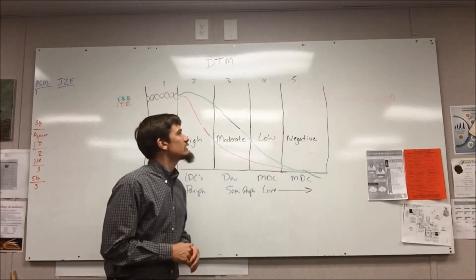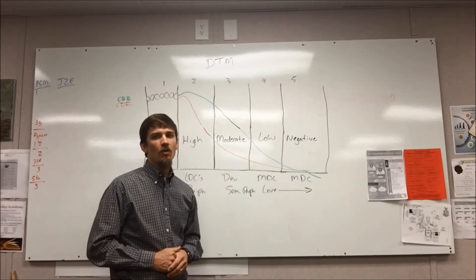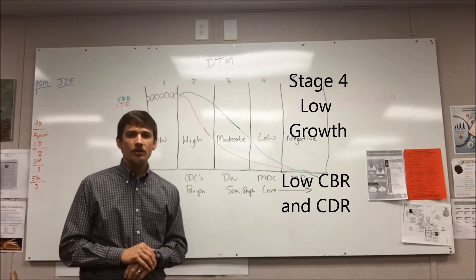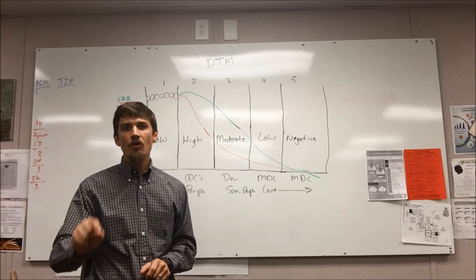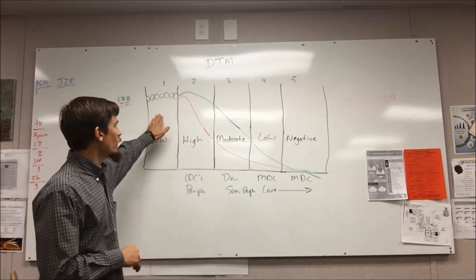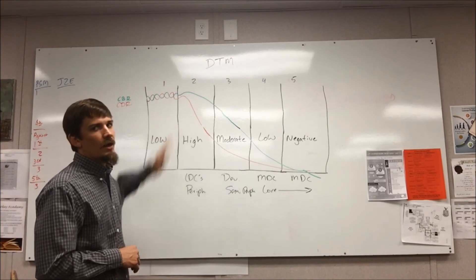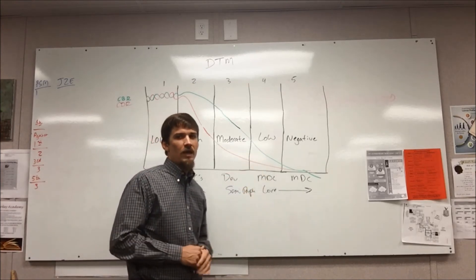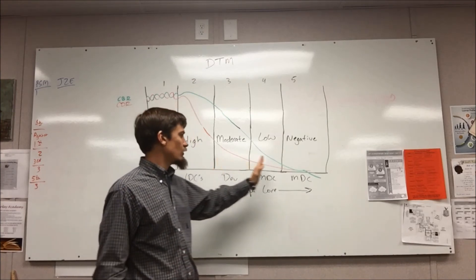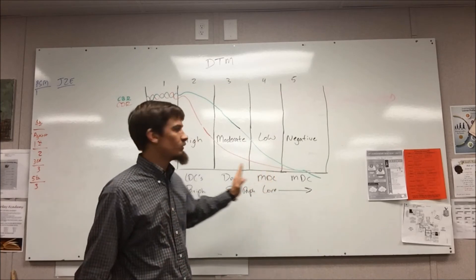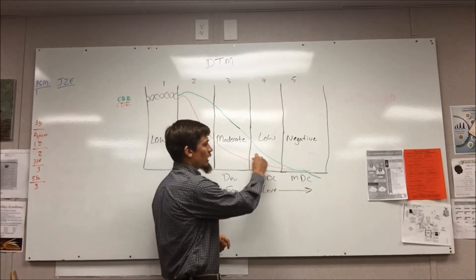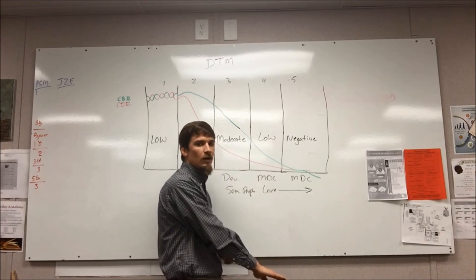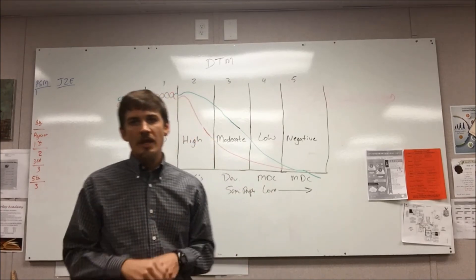Moving into stage four, it's characterized by a very low population growth rate. Stage four and stage one are both characterized by low population growth, but for two very different reasons. In stage one, the low growth was because high birth rates and death rates were canceling each other out. In stage four, both death rates and birth rates are at very low levels. As I tell my classes, death comes for all people — you can only push death rates down so low.